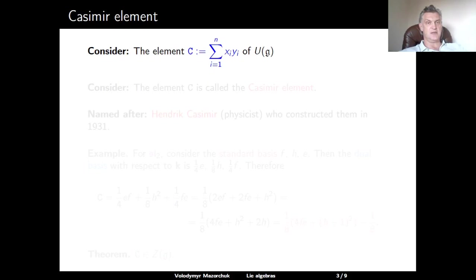So now we can define the Casimir element. The Casimir element C is defined as the element of U(G) given by the expression: the sum over i from 1 to n of x_i times y_i. So this is a quadratic expression. This element does not belong to the Lie algebra G, but it belongs to the universal enveloping algebra U(G).